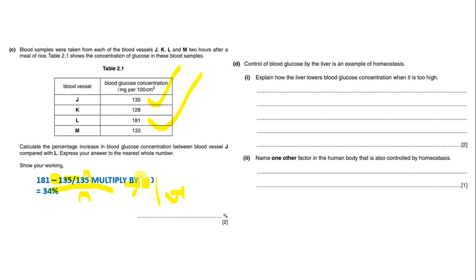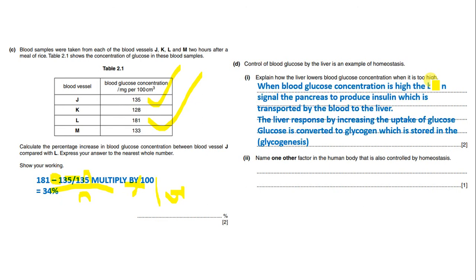Control of blood glucose by the liver is an example of homeostasis. Explain how the liver lowers blood glucose concentration when it is too high. When blood glucose concentration is high, the brain signals the pancreas to produce insulin, which is transported by the blood to the liver. The liver responds by increasing uptake of glucose, and the glucose is converted to glycogen stored in the liver — a process called glycogenesis.